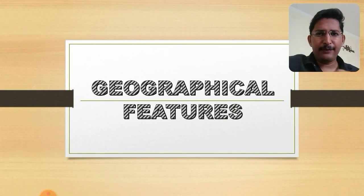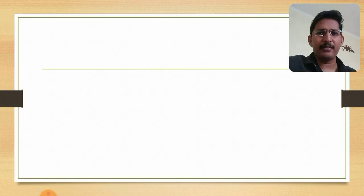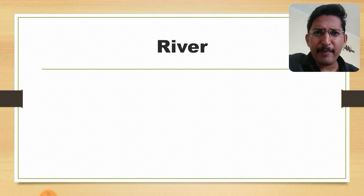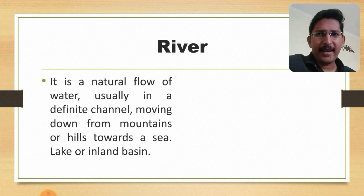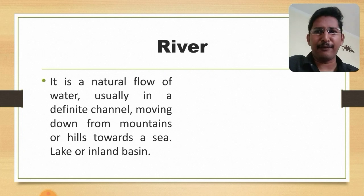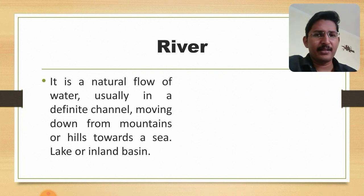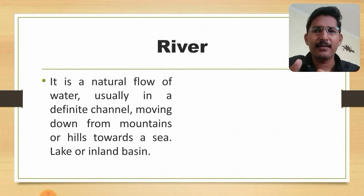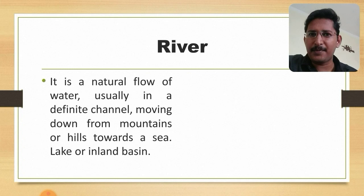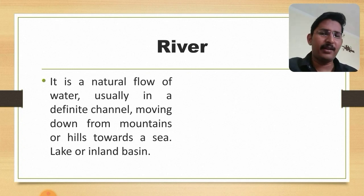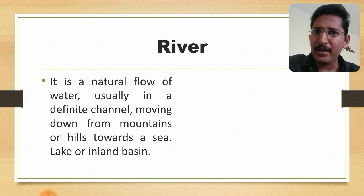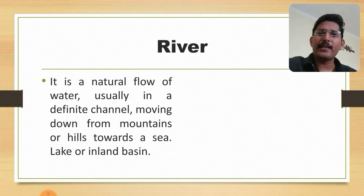As the first geographical feature, we are going to deal with river. We are so familiar with this concept. What do you mean by a river? Here is the definition: it's a natural flow of water, usually in a definite channel, moving down from mountains or hills towards a sea, lake or inland basin. It's a natural flow of water through a particular channel. Many of us live near to a river bank.